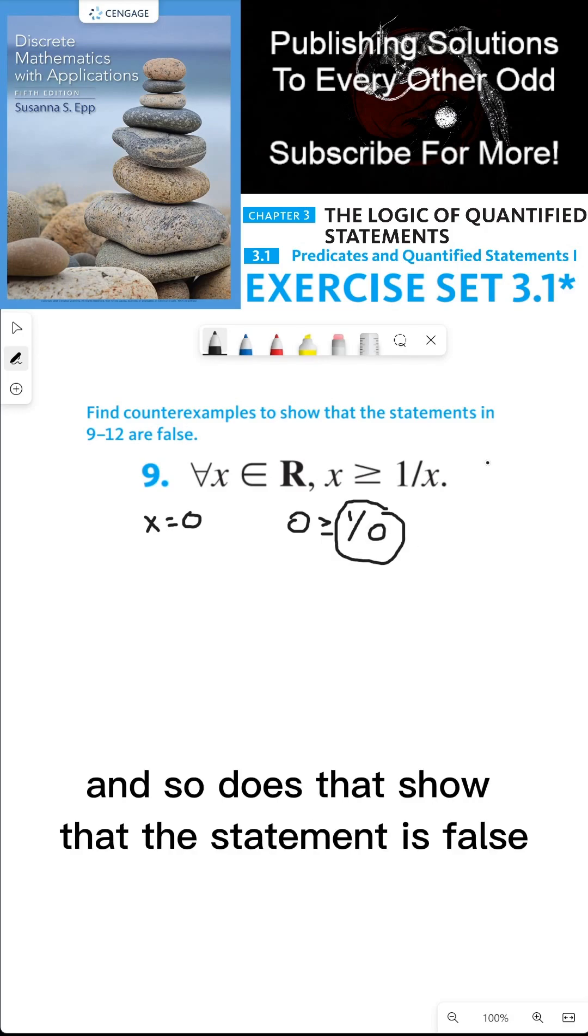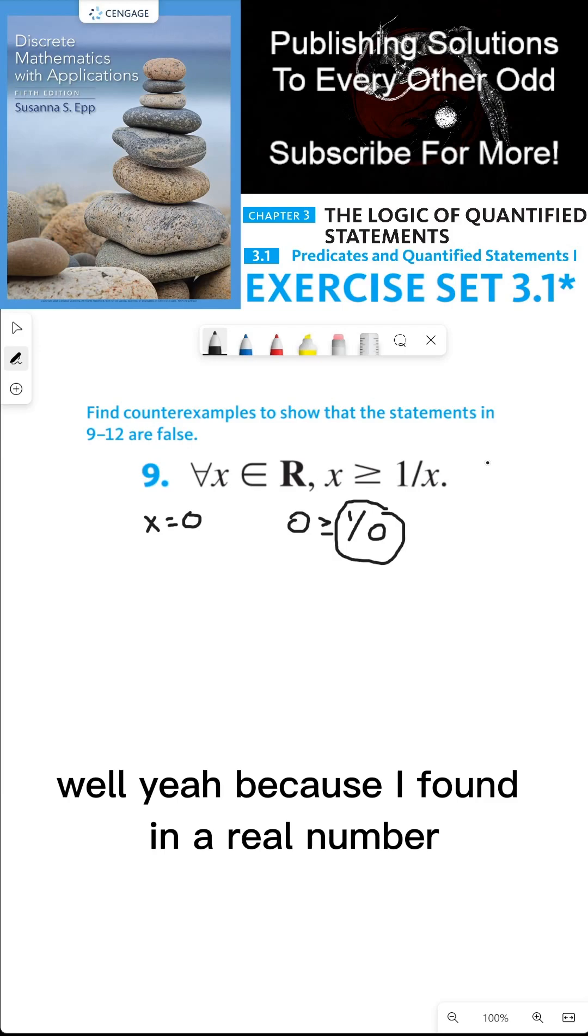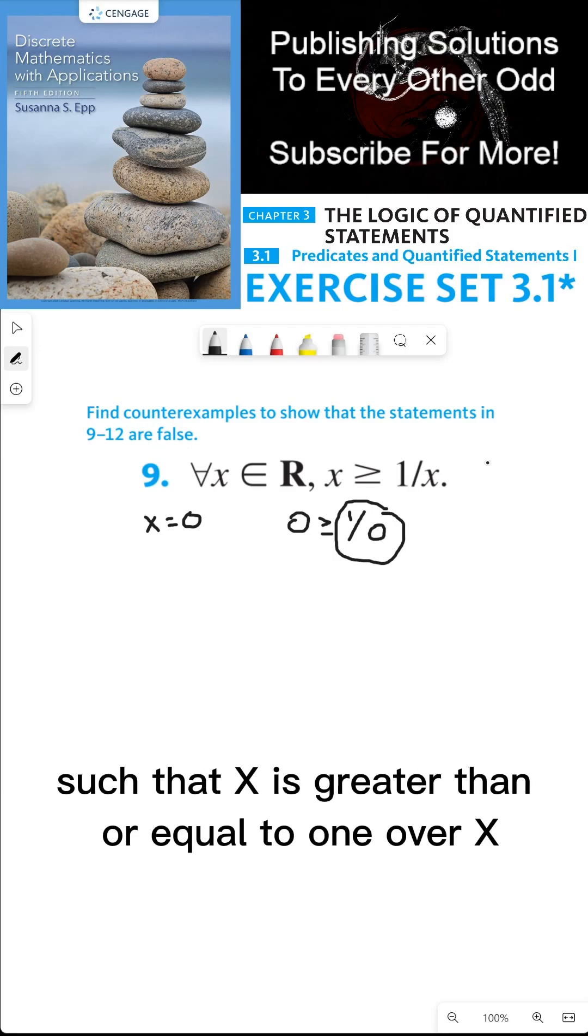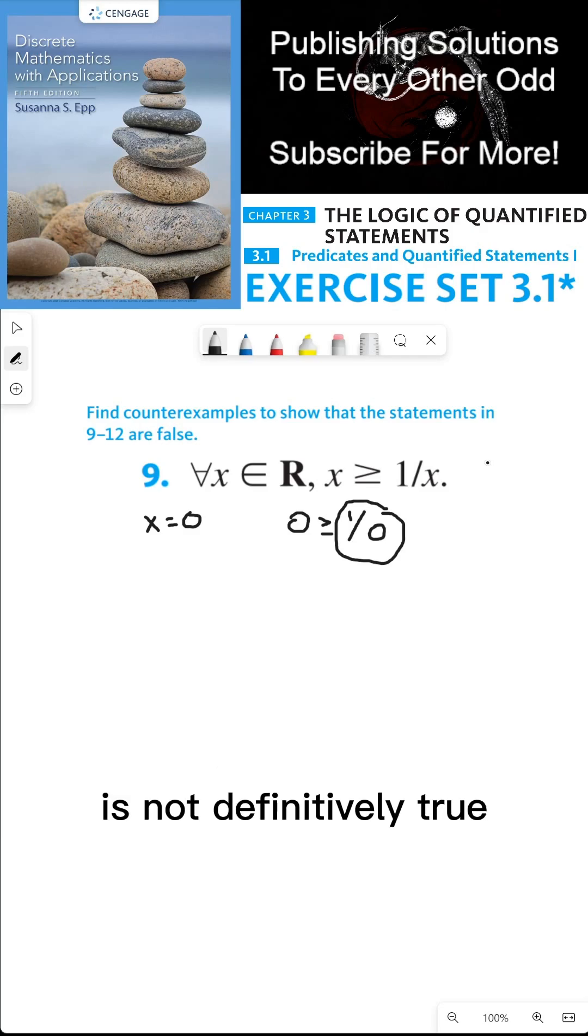And so does that show that the statement is false? Well, yeah, because I found a real number such that x is greater than or equal to one over x is not definitively true.